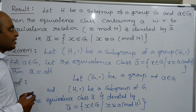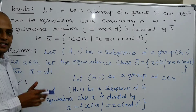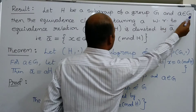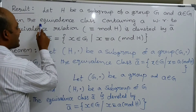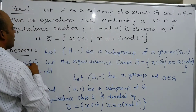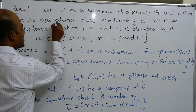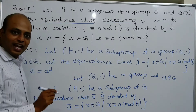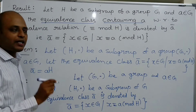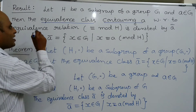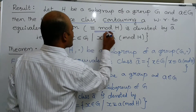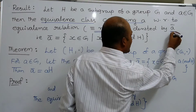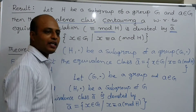Let us see a result that depends upon the previous class. Let H be a subgroup of a group G, and let small a be an element of G. Then the equivalence class containing the element a, with respect to the relation congruence modulo H, is denoted by a bar.